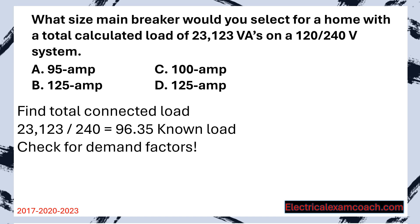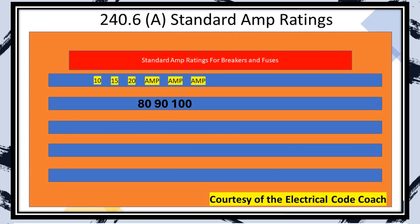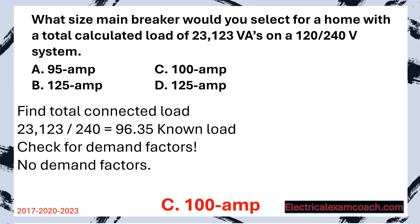Now we check for demand factors. Because this load calculation was already performed, there are no more demand factors to do — they were done along the way. We would have performed our range demand factor, our dryer demand factor, and now we have this total lump sum of 23,123. So all we have to do is divide by 240. Now that we have our known load, we head to Table 240.6A and choose the next size up — in this case, a 100 amp breaker. Great job.